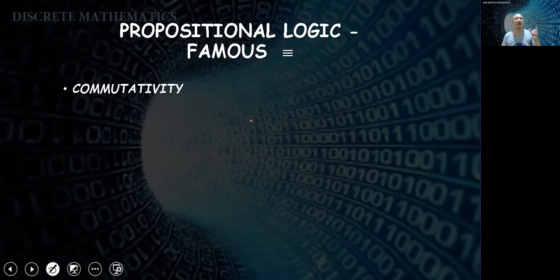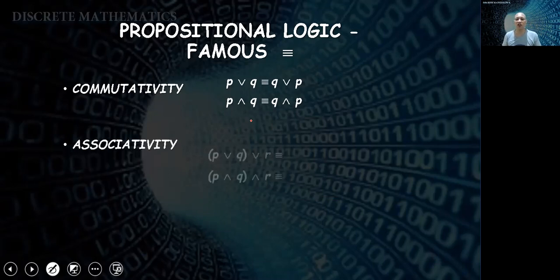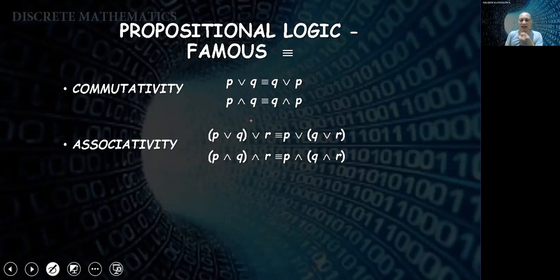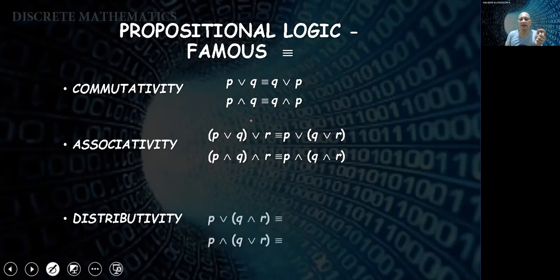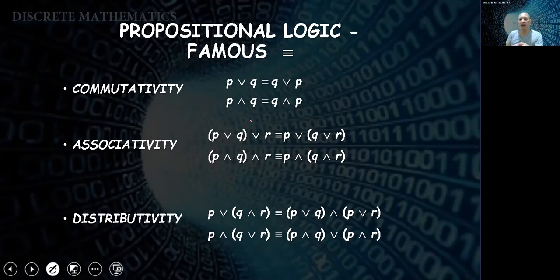Commutativity: P or Q equals Q or P, and P and Q equals Q and P — we can just switch them. Associativity: in P or Q or R, we can move the bracket; similarly for P and Q and R. Distributivity: P or (Q and R) distributes to (P or Q) and (P or R); similarly P and (Q or R) distributes to (P and Q) or (P and R).